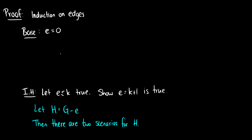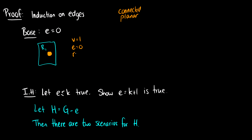The base case is when the number of edges is equal to zero. How do we have a connected planar graph with zero edges? We can have one vertex, and that's it. So V equals 1, E equals 0, and there is one region, which is the region outside of the graph. So V minus E plus R is 1 minus 0 plus 1, which equals 2. Our base case is good.